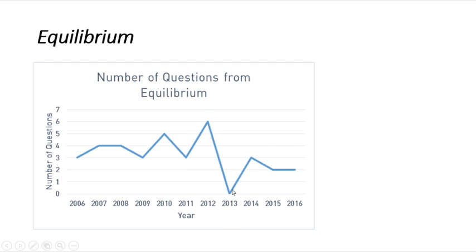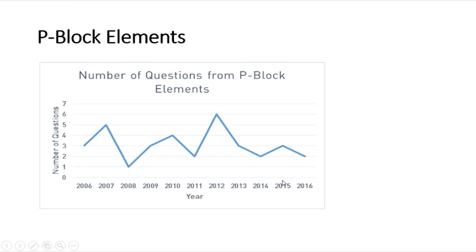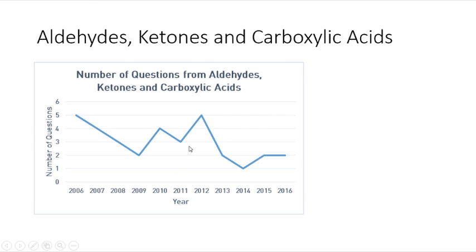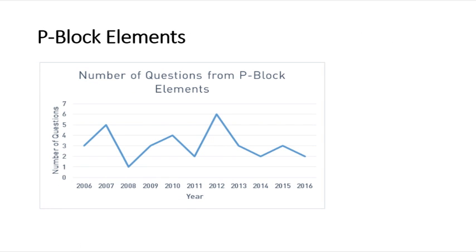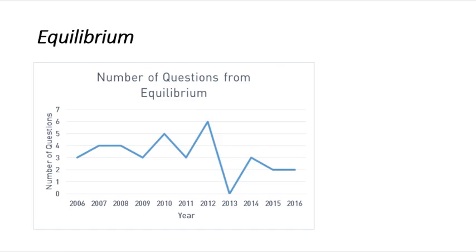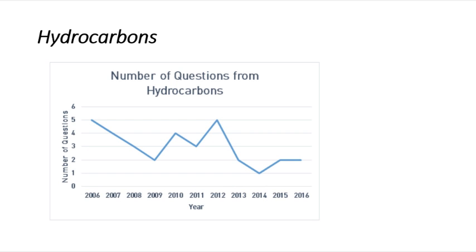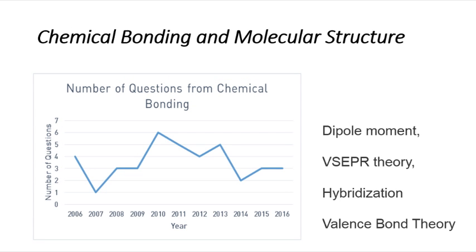In p-block elements, around two questions were asked in 2006 and a maximum of six questions in 2012. In aldehydes and carboxylic acids, two questions were asked in 2015 and 2016, whereas in 2012 it was around five questions. These are the important topics and you have a statistical report showing different question distributions.